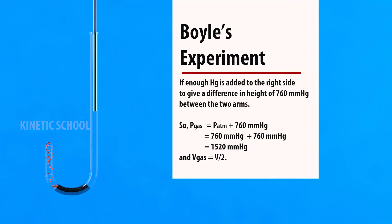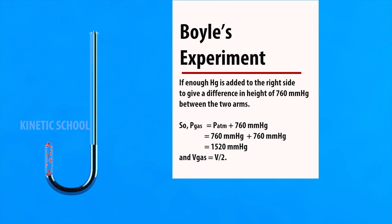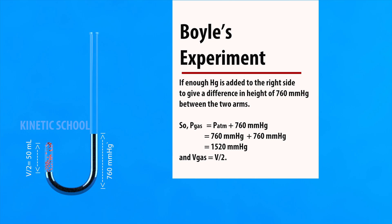If enough mercury is added to the right side to give a difference in height of 760 millimeters of mercury between the two arms, then the pressure of the gas is 760 millimeters of mercury — that means 1 atmospheric pressure — plus 760 millimeters of mercury added to the column. Then the total pressure of the gas is 1520 millimeters of mercury, and the volume is half of the total volume of the gas.